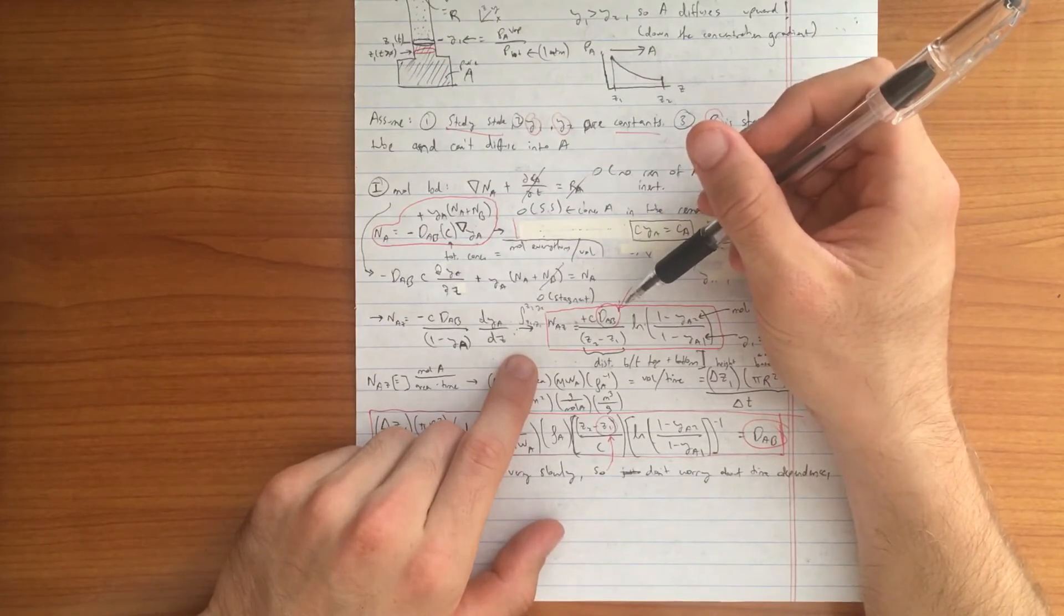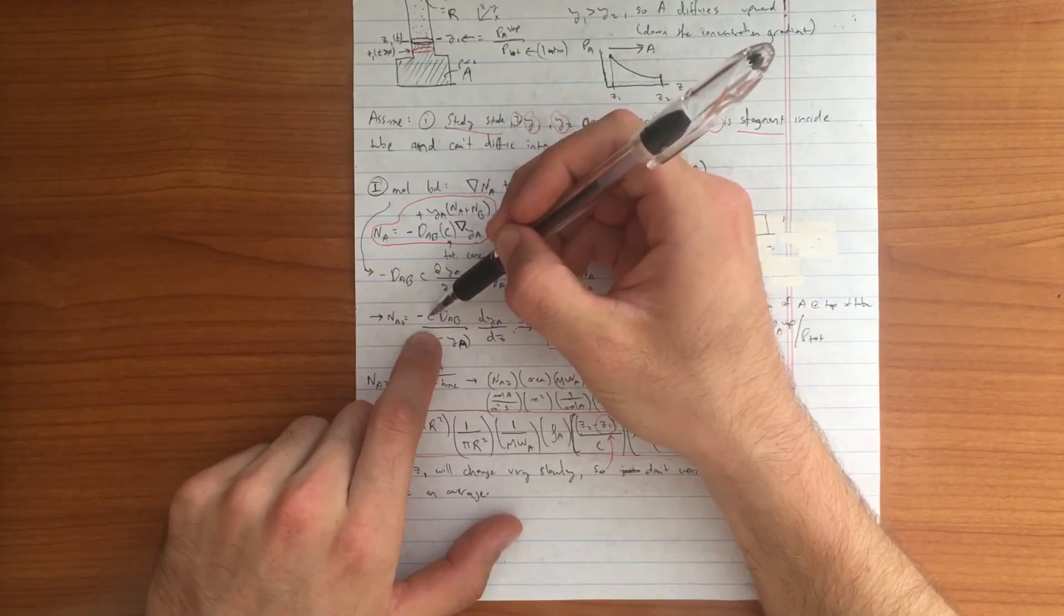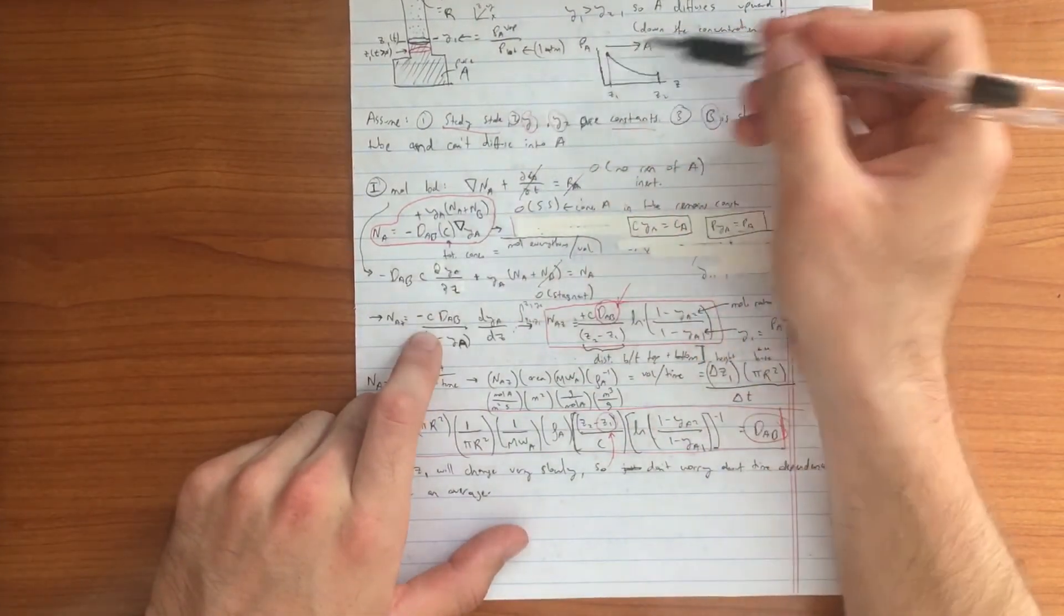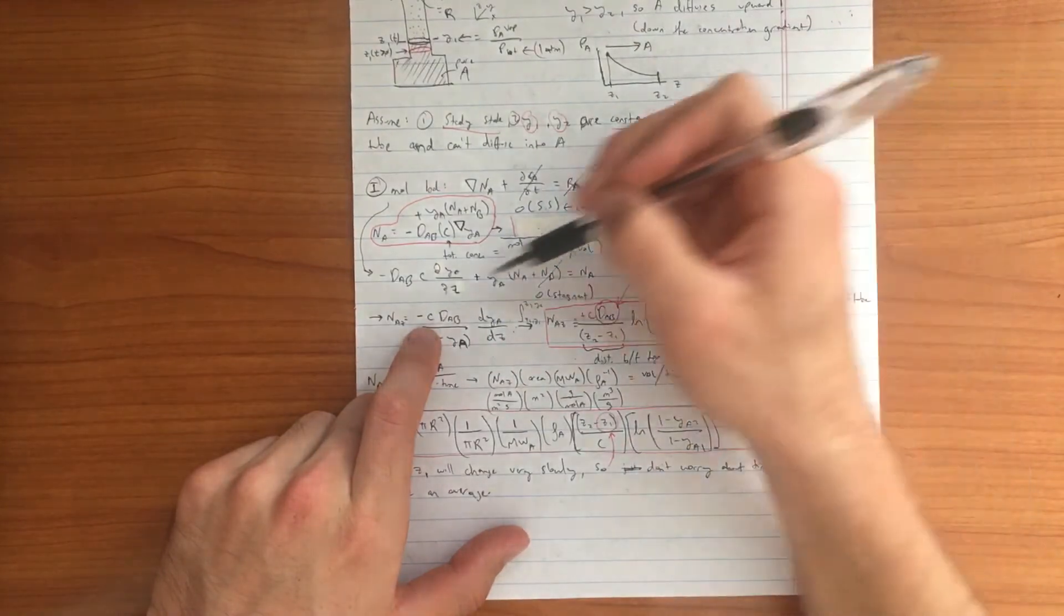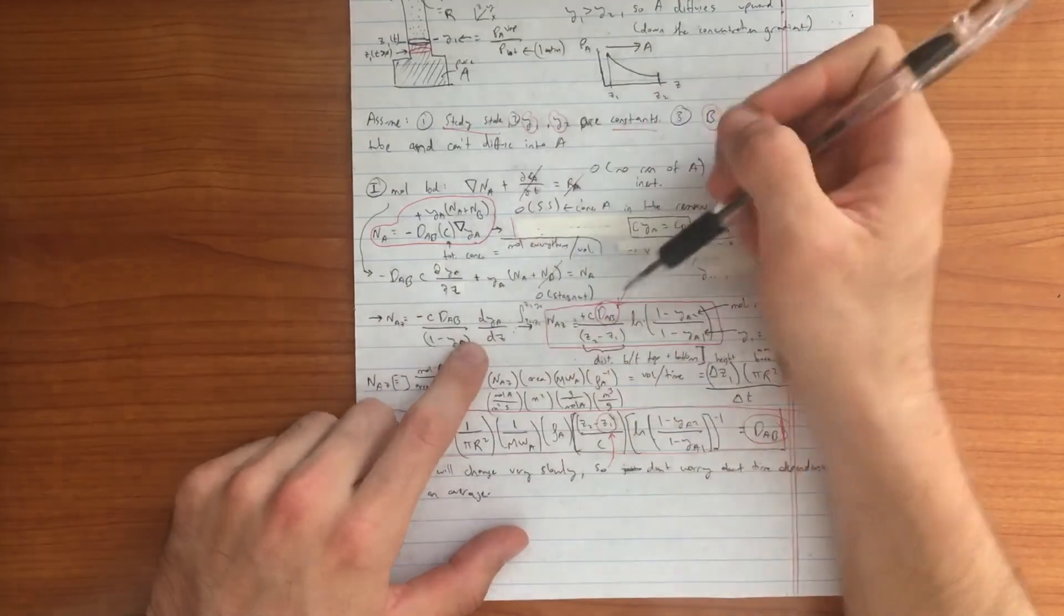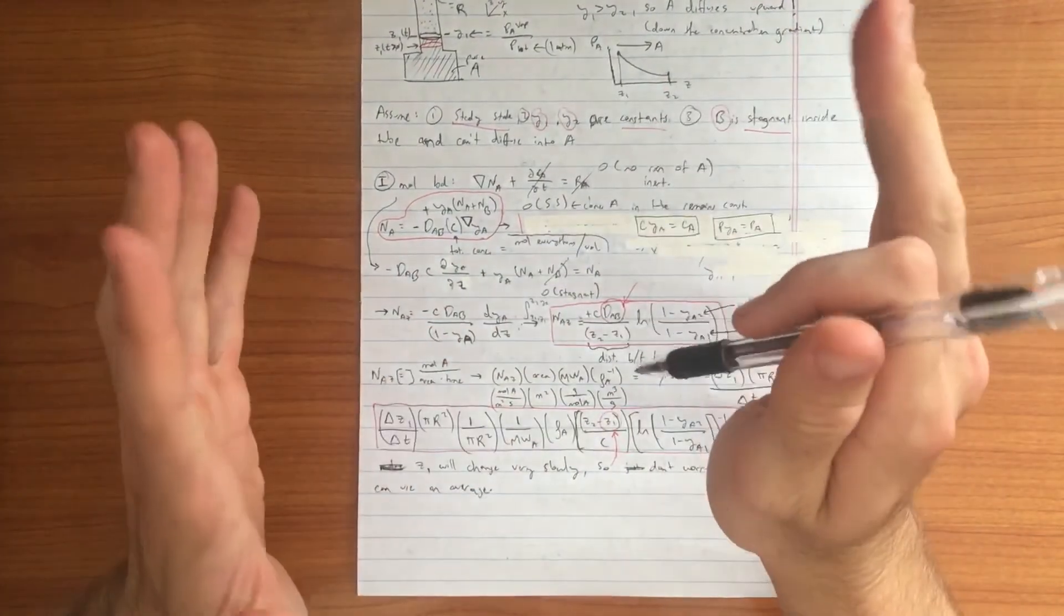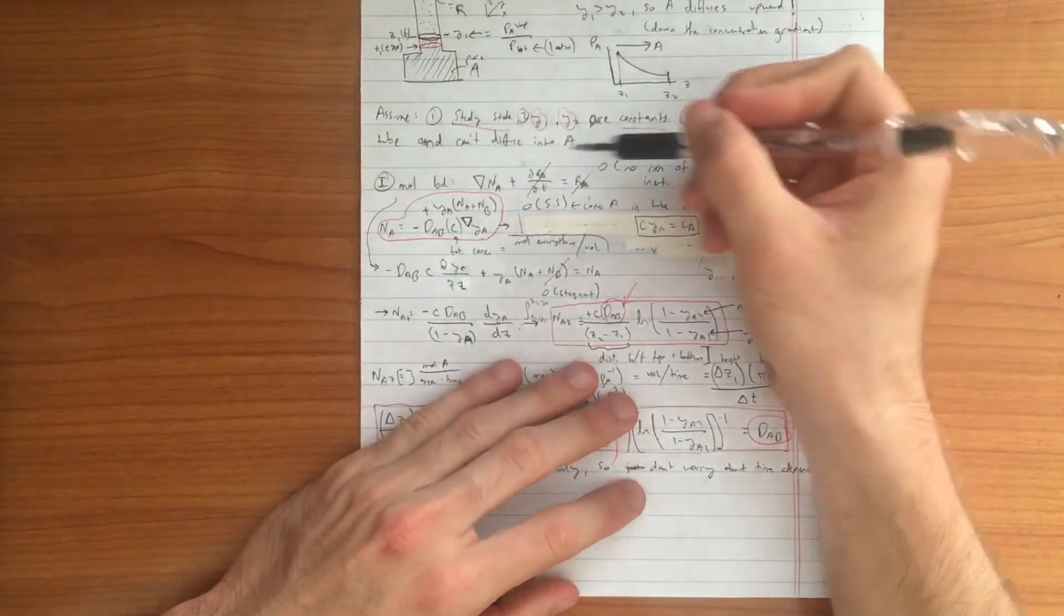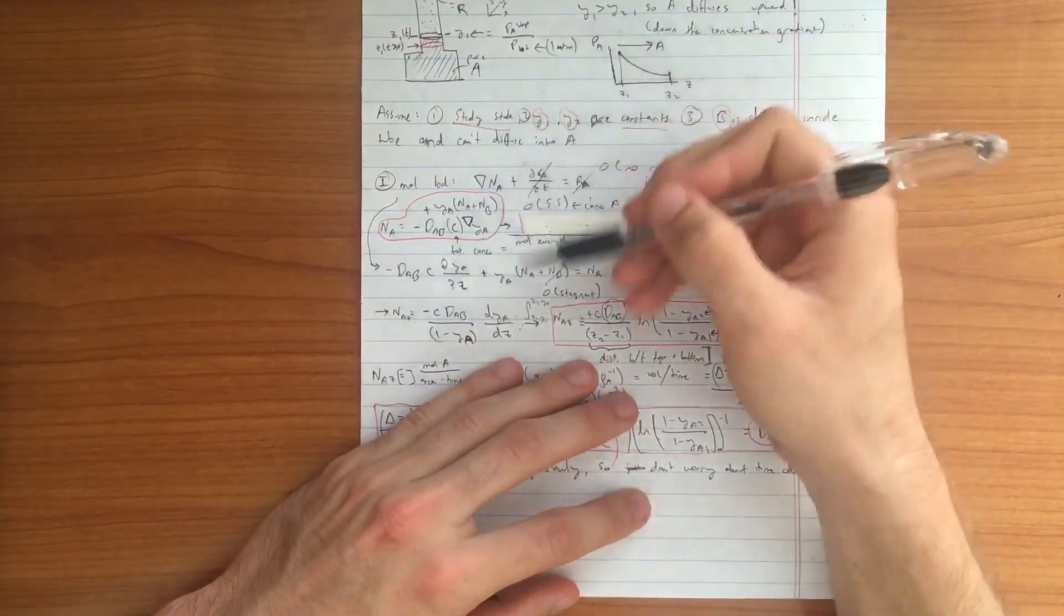Another important thing to note is if our concentration remains constant, which it does because we have no reaction present, we can incorporate and use this rule: CYA is equal to CA and sometimes you also see minus DAB dCA/dZ written as NAZ. But again, it's very important to start from the design equations and work your way through this because you don't know what assumptions you can make along each step of the way.